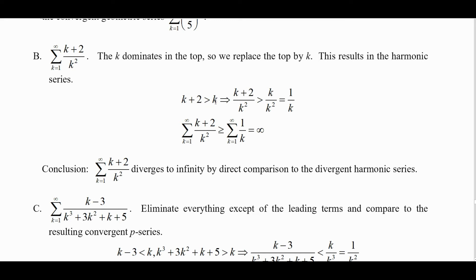Since k plus 2 is greater than k, we have (k plus 2) over k squared is greater than k over k squared, which is 1 over k. So the sum from k equals 1 to infinity of (k plus 2)/k² is greater than or equal to the sum of 1/k, which is infinity. Therefore this series diverges to infinity by direct comparison to the divergent harmonic series.